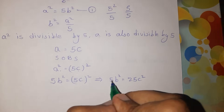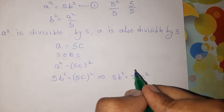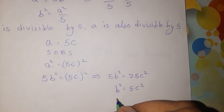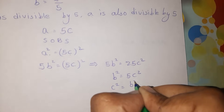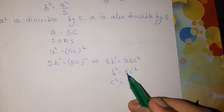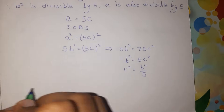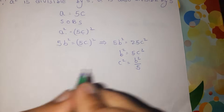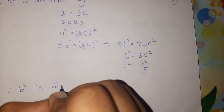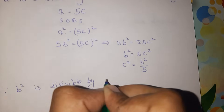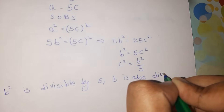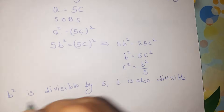Cancelling 5 from both sides, b square is equal to 5c square. Therefore b square is divisible by 5, and since b square is divisible by 5, b is also divisible by 5.